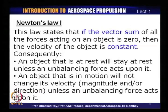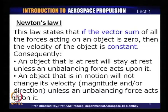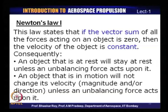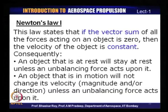The first law states that if the vector sum of all the forces acting on an object is zero, then the velocity of the object is constant — if it is at rest it will remain at rest, if it is in motion it will remain in motion without any change. There will be no acceleration, no change in velocity, no change in direction. If you want any of those three — a change of direction, an acceleration, or a change of velocity — you need to apply force in a certain direction.